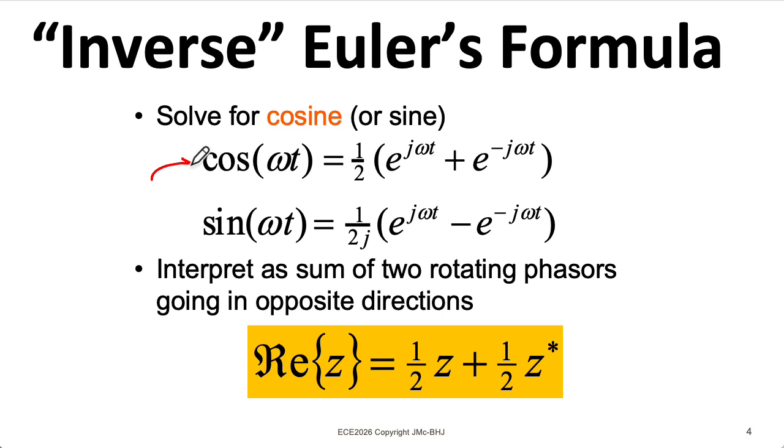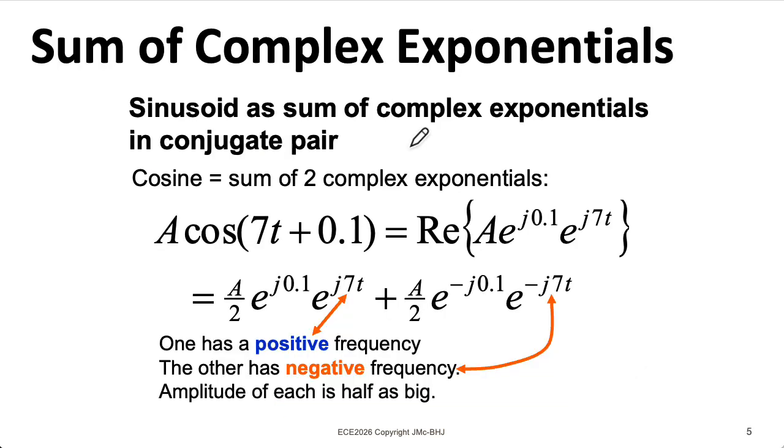This inverse Euler's formula for the cosine is a special case of this general expression for the real part of a complex number in terms of the number plus its complex conjugate divided by 2. So let's think of a particular example. Here we have a frequency of 7 radians per second. We have a phase of 0.1. That's just 0.1, not 0.1 pi in this example. And we have a somewhat generic amplitude A.